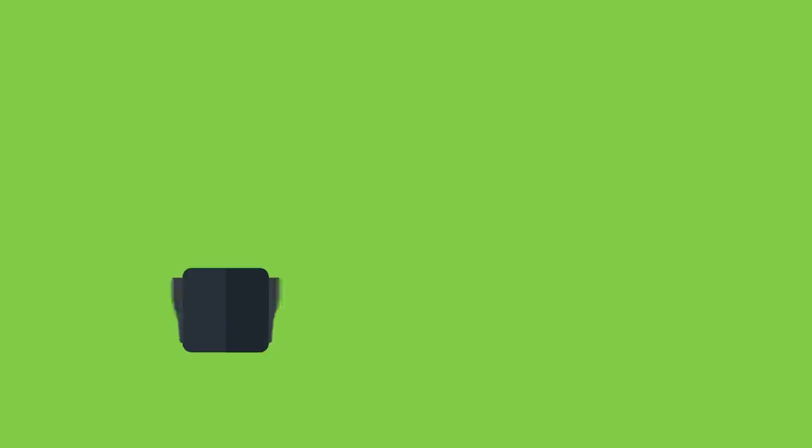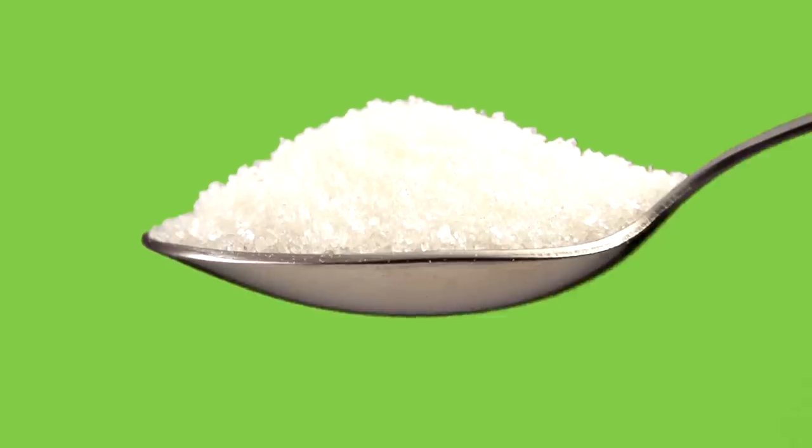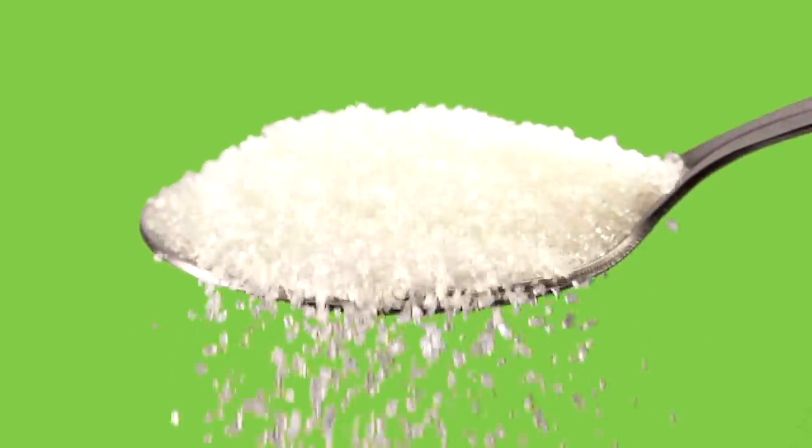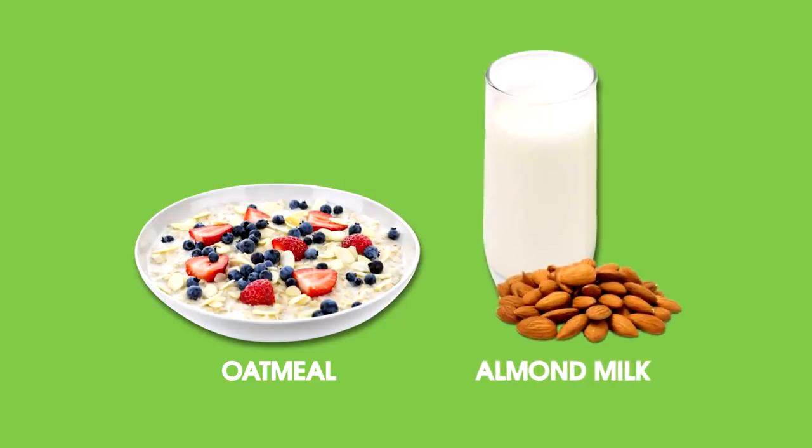The limited role I see for yellow light foods in a healthy diet is to promote the consumption of green light foods. They can be the spoonful of sugar that makes the medicine go down. So if the only way I can get a patient to eat oatmeal in the morning is to make it creamy with almond milk, then tell them to add almond milk.